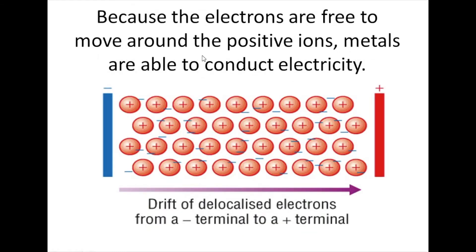Because the electrons are free in the structure, they can move, and so they can carry a charge — they carry a current. They can move from one end of the metal to the other when you apply a voltage through it.